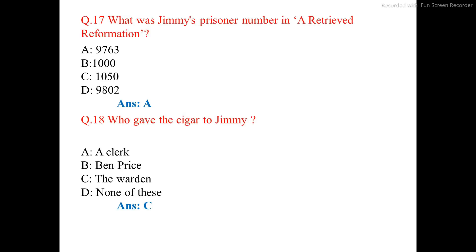Question number 17. What was J.B. Shaw's prisoner number in A Retrieved Reformation? The correct answer is option A: 9763.